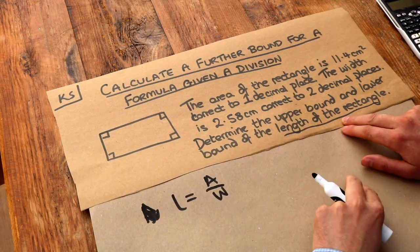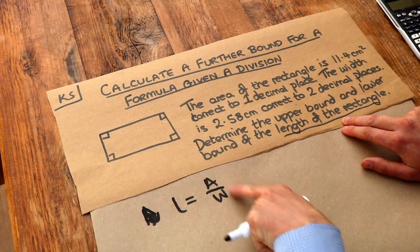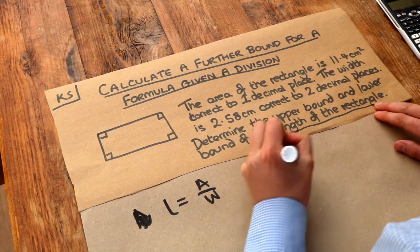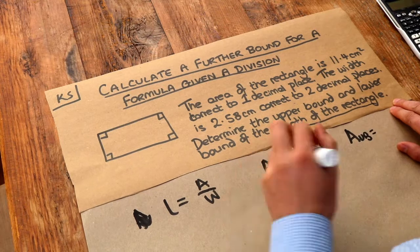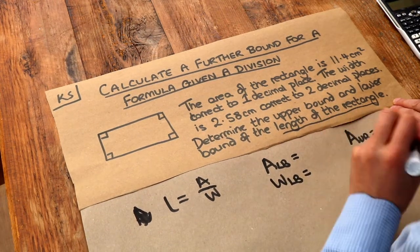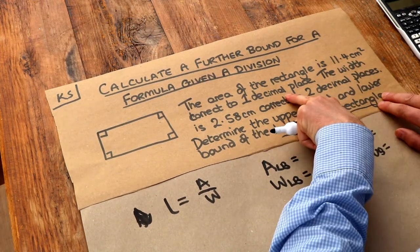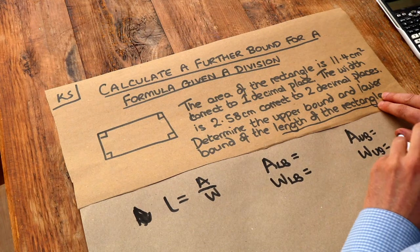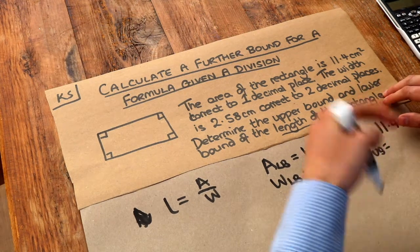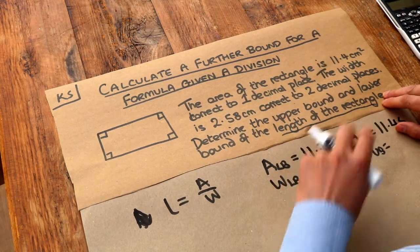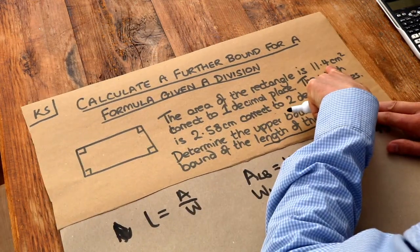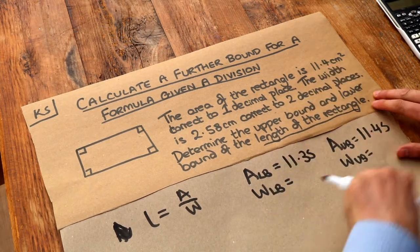Now somehow we need to use the bounds for this. So let's work out the lower and upper bound for each of these two quantities, the area and the width. The area was 11.4, correct to one decimal place. The lower bound would be 11.35 and the upper bound would be 11.45. The quick way that works most of the time, if you're rounding to decimal places or significant figures, is you reduce the last digit by one and stick a five on the end to get the lower bound, and stick a five on the end to get the upper bound.